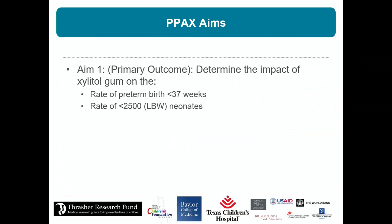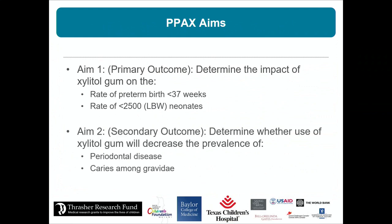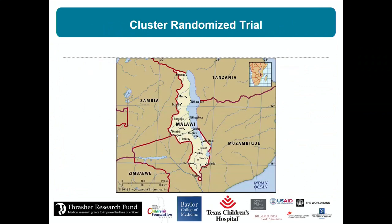We defined preterm birth as less than 37 weeks and low birth weight as less than 2,500 grams. We also looked at dental caries in the mothers. The trial was conducted in eight health districts and community hospitals in and around the capital, Lilongwe, with four health centers as control and four as intervention.